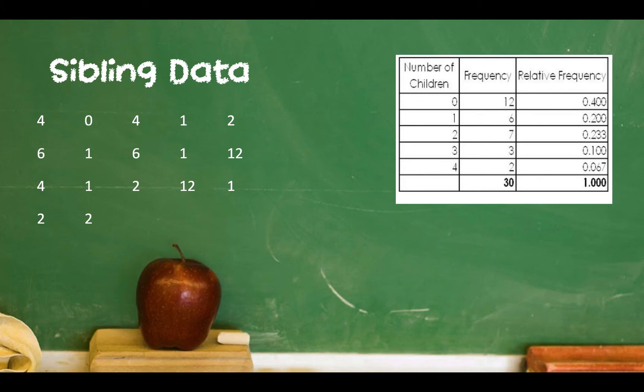Let's take a look at the sibling data set. Notice that we have values ranging from 0, 1, 2, then jumping to 4, 6, and then 12. The range of the data values from 0 to 12 is relatively small, though 12 is a bit of an outlier. So we will use the data values 0, 1, 2, 4, 6, and 12 to formulate the bins themselves.